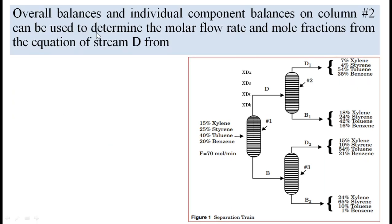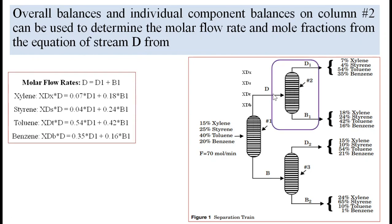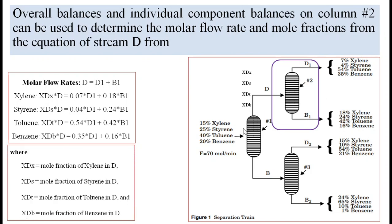Similarly, overall balances and individual component balances on column 2 can be used to determine the molar flow rate and mole fractions of stream D. We get the equation D = D1 + B1, along with four component equations for xylene, styrene, toluene and benzene, where xdx, xds, xdt and xdb are the mole fractions of xylene, styrene, toluene and benzene in the distillate.